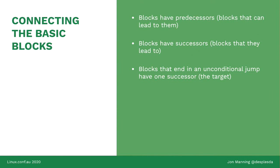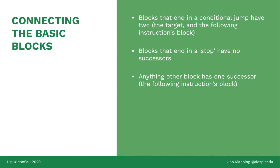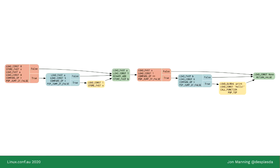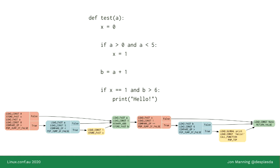Once we have basic blocks, we can create the graph between them. Blocks have predecessors — blocks that can lead into them — and successors — blocks that can follow them. Blocks ending in an unconditional jump always have one successor: the block they're jumping into. A block ending in a conditional jump has two successors: the jump target and the following block. Blocks ending in a stop have no successors. Any other block has one successor: the following instruction. We can then rearrange that into a graph showing the possible ways through the program.